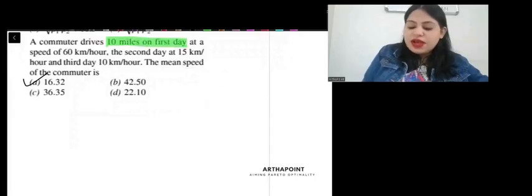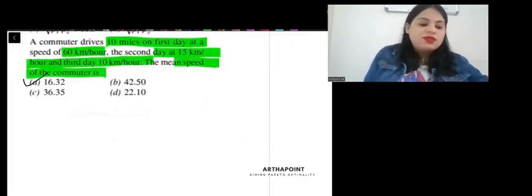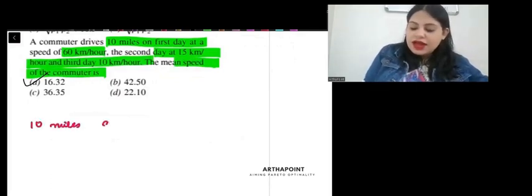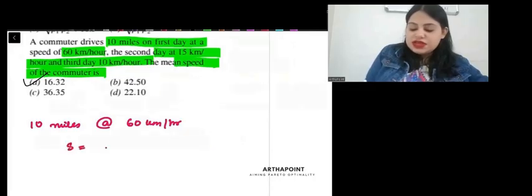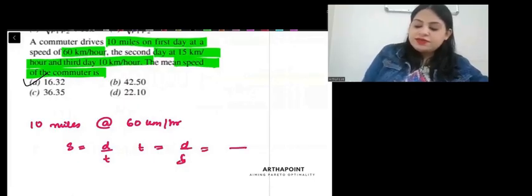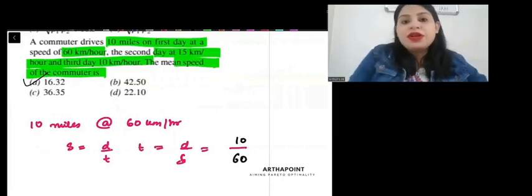Let's come to the next question. A commuter drives 10 miles on first day at speed of 60, second day 15, third day 10, the mean speed of the commuter is. So, 10 miles at the rate of 60 km per hour. We know that speed is distance by time. So time will be distance by speed. So it will be 10 by 60. Now one important thing here. You are given distance in terms of miles. So, you must convert miles into km.